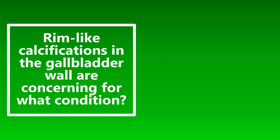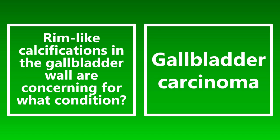Rim-like calcifications in the gallbladder wall are concerning for what condition? You want to be thinking about cancer, specifically gallbladder carcinoma. If you see an ultrasound or CT scan that mentions rim-like calcifications around the gallbladder, think gallbladder carcinoma.